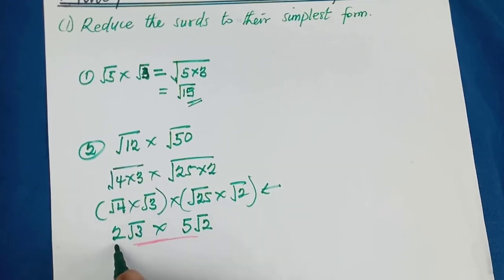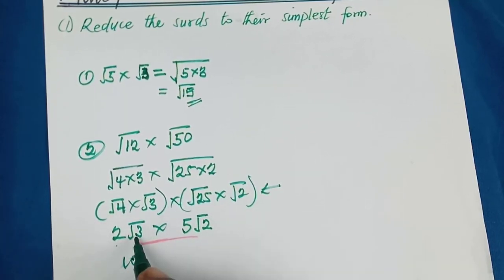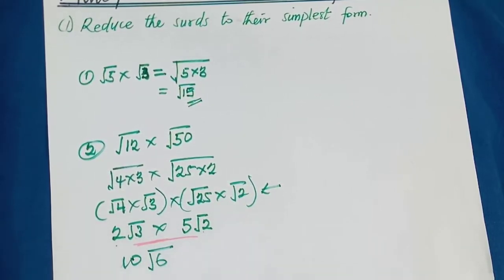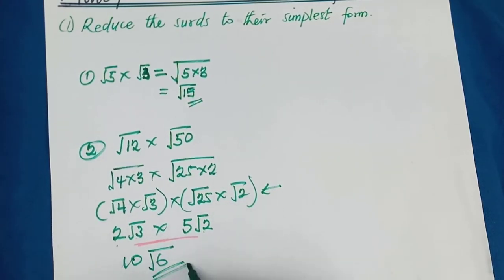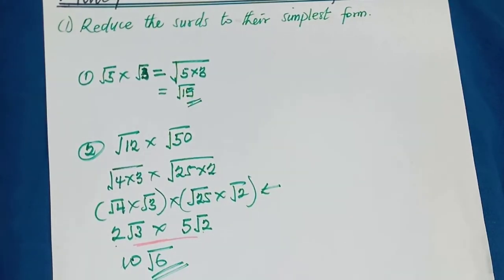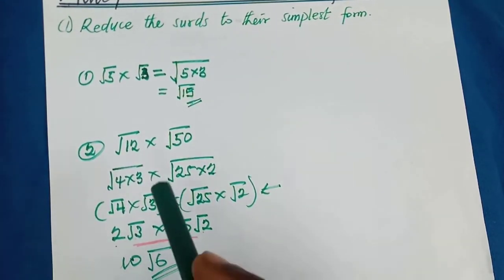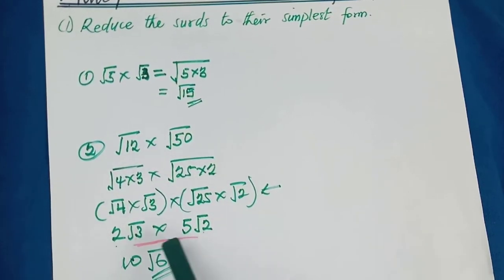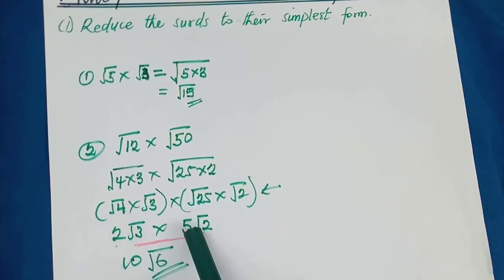The rational part multiplies the rational part: 2 times 5 gives 10. Then root 3 times root 2 — the radicands multiply — 2 times 3 gives 6, so we have 10 root 6. That's our answer. Reduce the sets to simplest form first, then the rational parts multiply and the square root parts multiply each other.